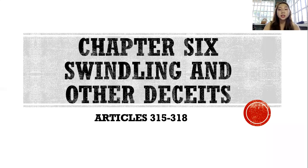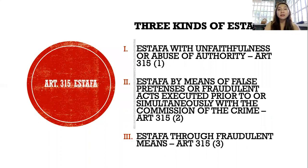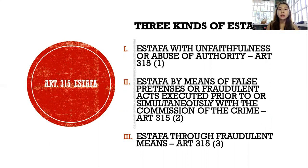Next is Chapter 6 or swindling and other deceits, which includes Articles 315 to 318. Article 315 is estafa. There are three kinds of estafa: the first is estafa with unfaithfulness or abuse of authority; the second is estafa by means of false pretenses or fraudulent acts executed prior to or simultaneously with the commission of the crime; and the third is estafa through fraudulent means.